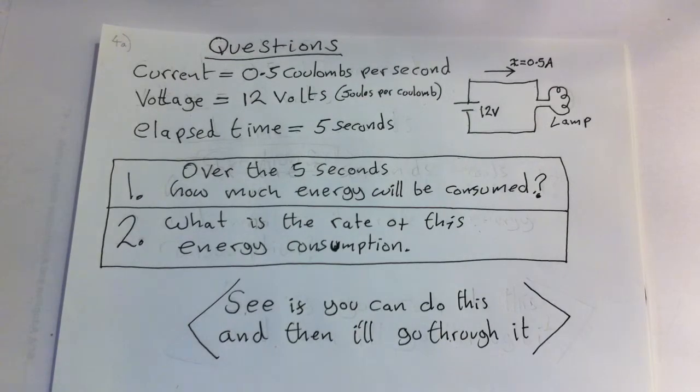So, let's say in our bulb circuit, that 0.5 coulombs per second is the rate of charge flow, current. So, if we leave our circuit switched on for, say, 5 seconds, how much energy will be consumed by the bulb and what is the rate of this energy consumption, e.g. the rate being the number of joules per each second. Okay, you'll pause this video and see if you can answer both these questions that I've shown here on the slide. I'll then go through them.